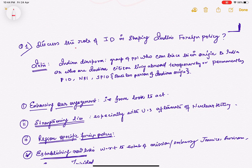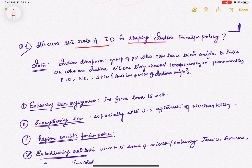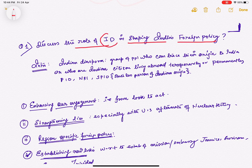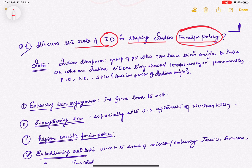The first question was: discuss the role of the Indian diaspora in shaping India's foreign policy. What are the keywords here? First is diaspora and second is foreign policy. Most of you must know that foreign policy is a set of norms or rules that a nation adopts towards another nation. But do we need to write the meaning of foreign policy here? No. But do we need to write the meaning of Indian diaspora? Yes.